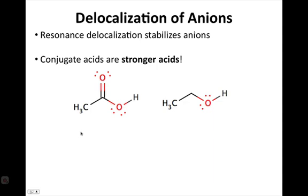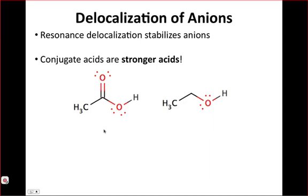Resonance delocalization is the first one, and it stabilizes anions because it spreads negative charge out. So if we compare these acids, ethanol on the right, acetic acid on the left, we can see by looking at the charged species involved in each equilibrium, which in both cases is the anion or the conjugate base of the starting compound, we see there's no delocalization at all in the ethoxide anion. That negative charge is simply stuck on the oxygen atom.